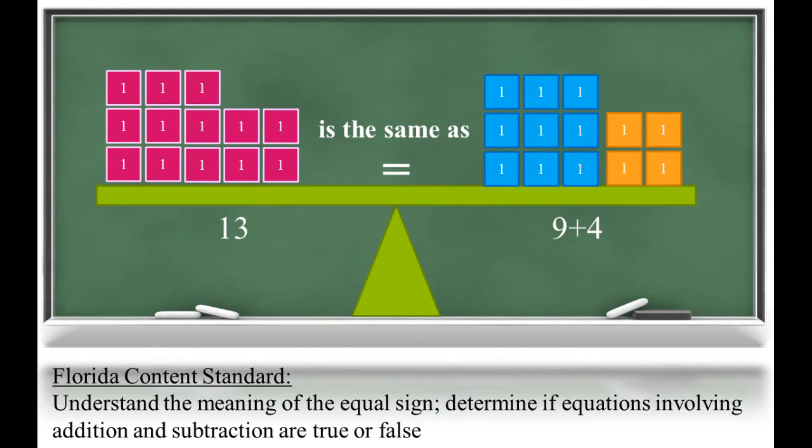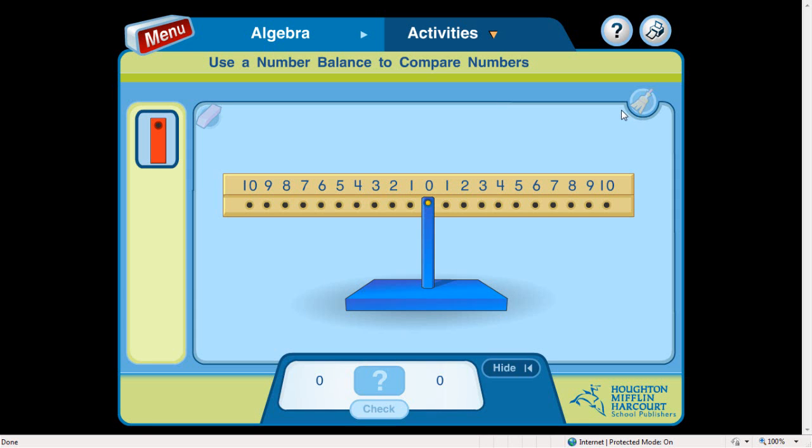You can continue this exploration at home using the iTools balance. To find this tool, you can go to thinkcentral.com and log in using your child's lunch number and birth code, which is the two-digit month and four-digit year of their birthday. There is also a link under the section Helpful Links on the parent flyer that will take you directly to this page.